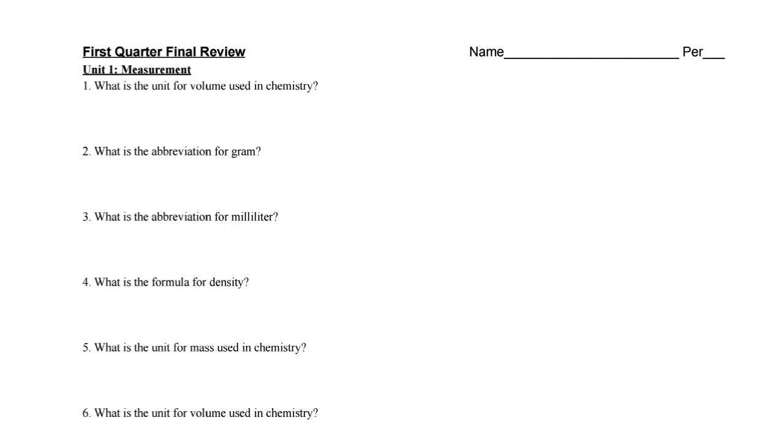What is the unit for volume units in chemistry? What I was looking for here is liter. We then attach prefixes to this like milli, a milliliter, but the base unit there is liter. What's the abbreviation for gram? A little g, abbreviation for milliliter, mL, formula for density. Density is equal to mass divided by volume.